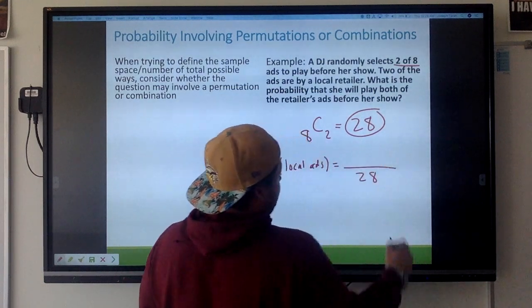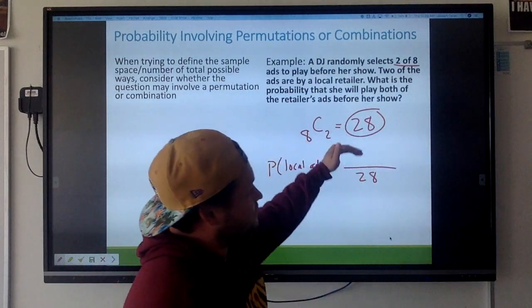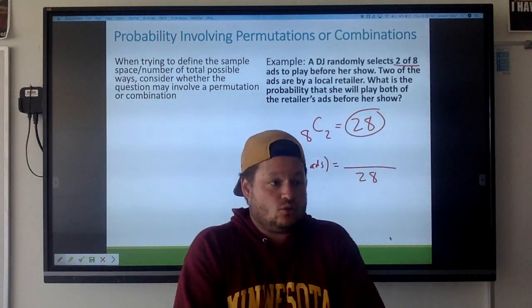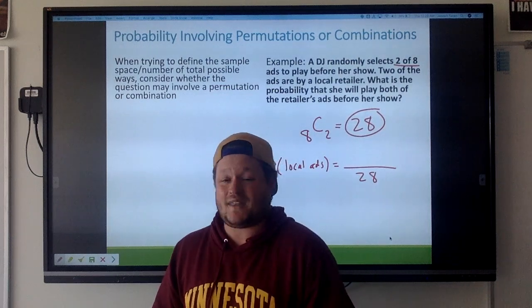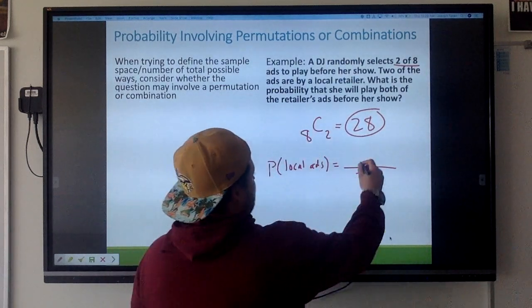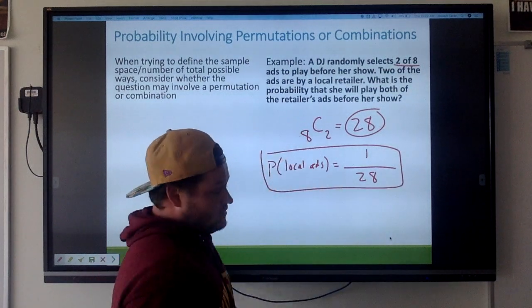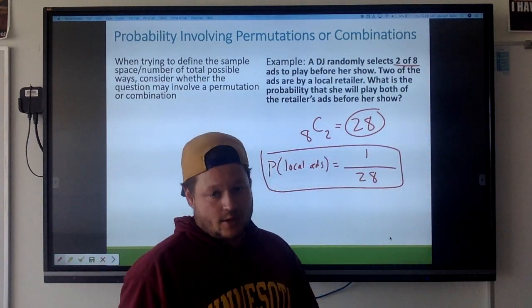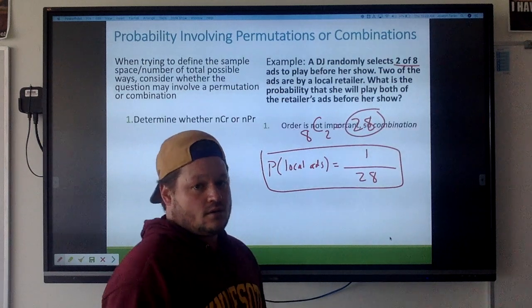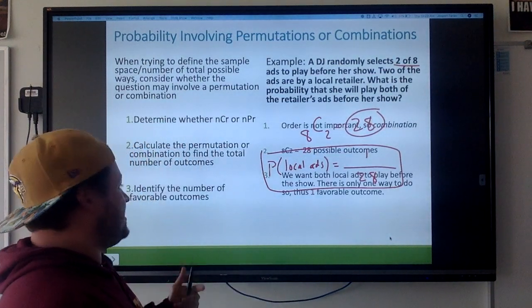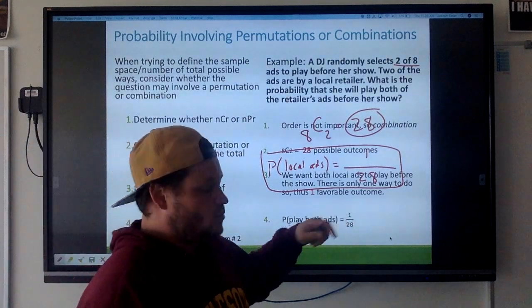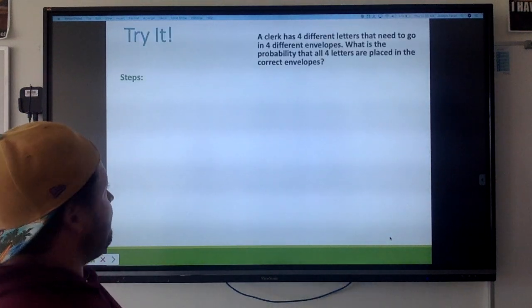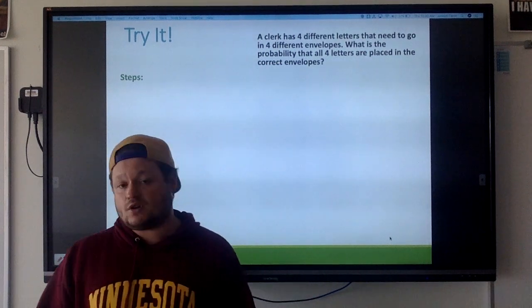There's 28 possible ways she can play these ads, right? We just figured that out. So now what is the probability that she selects both those two local retailers ads? Well isn't there only one way that could happen? So the probability would just be one over 28. And that's it. Whenever you're doing probability with permutation and combination, it's always going to affect the denominator. So this is kind of just the PowerPoint going through the same thing I just said. Notice they got one out of 28 as well.